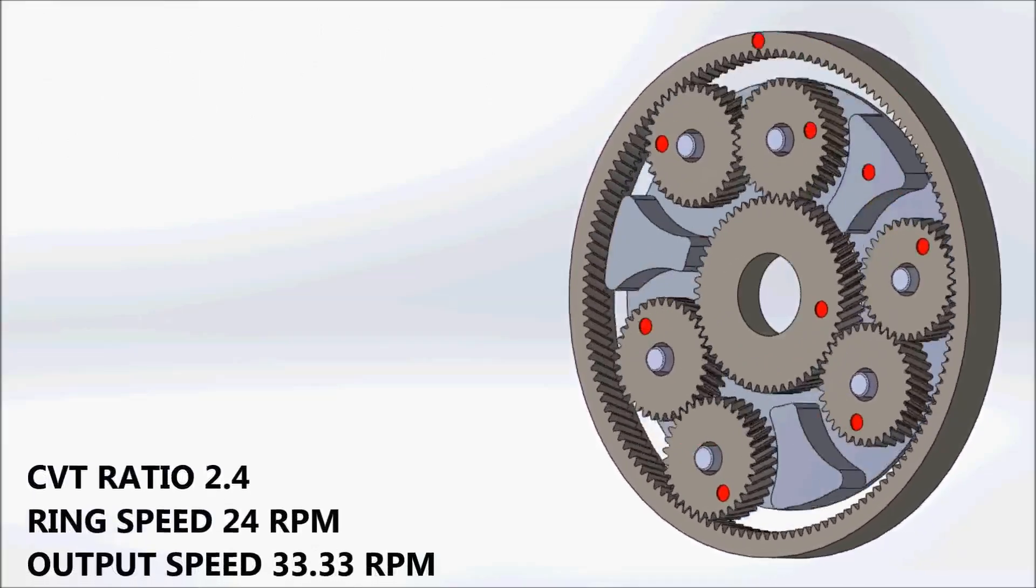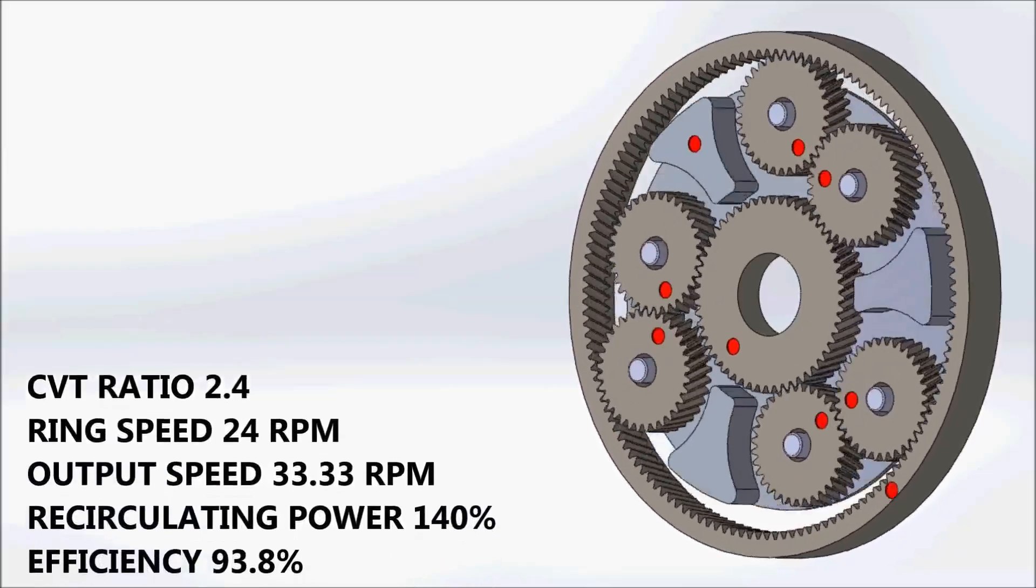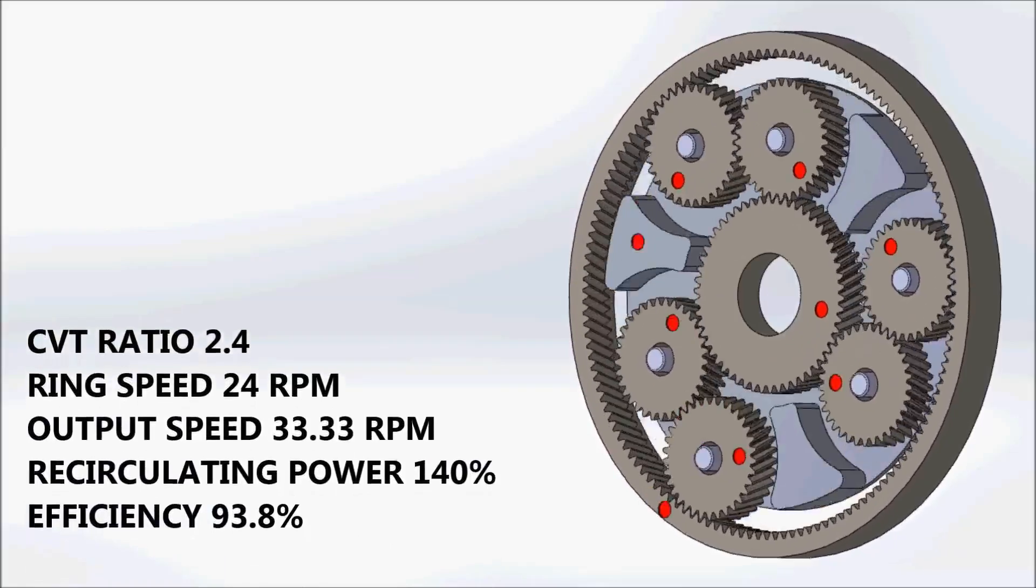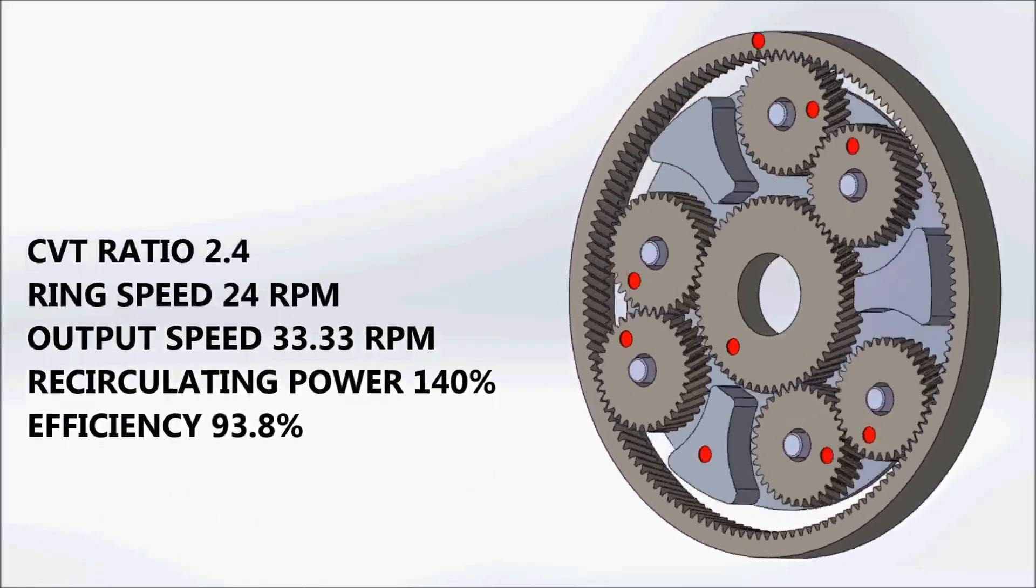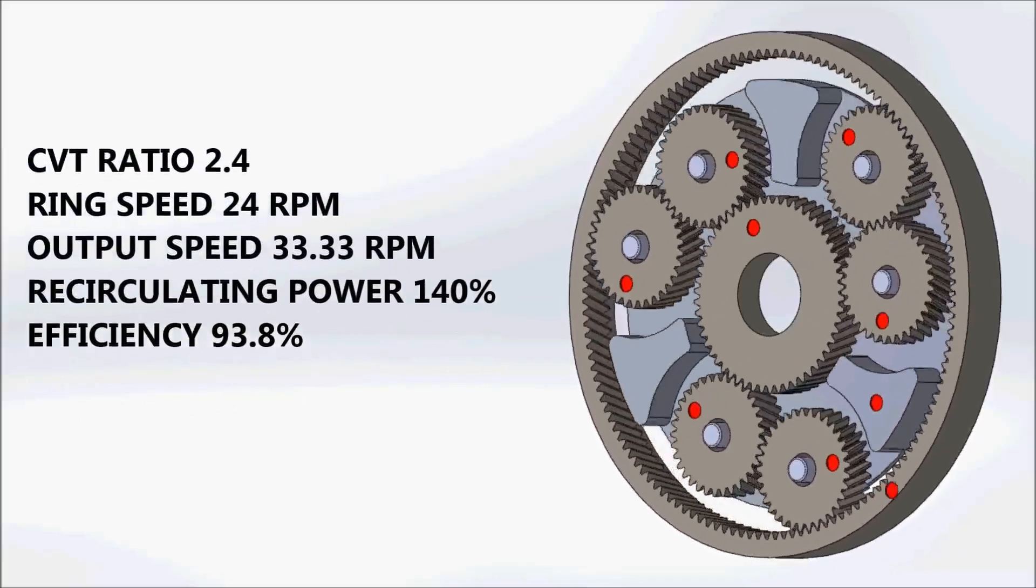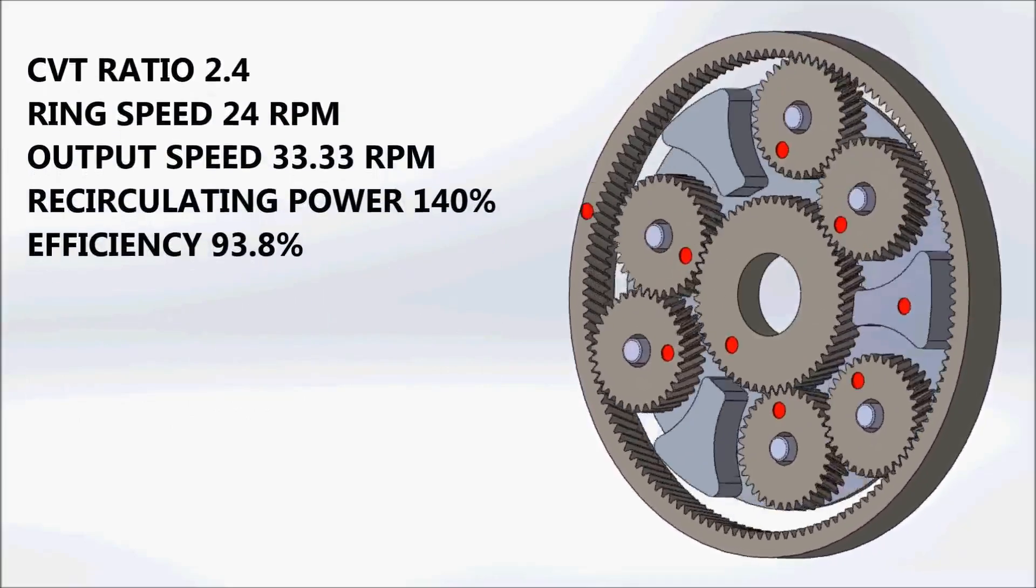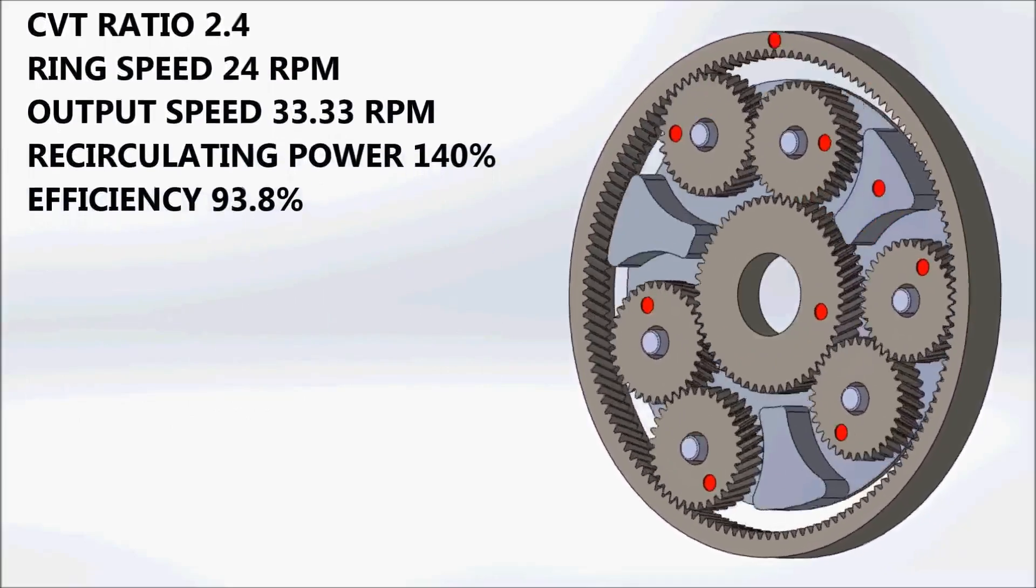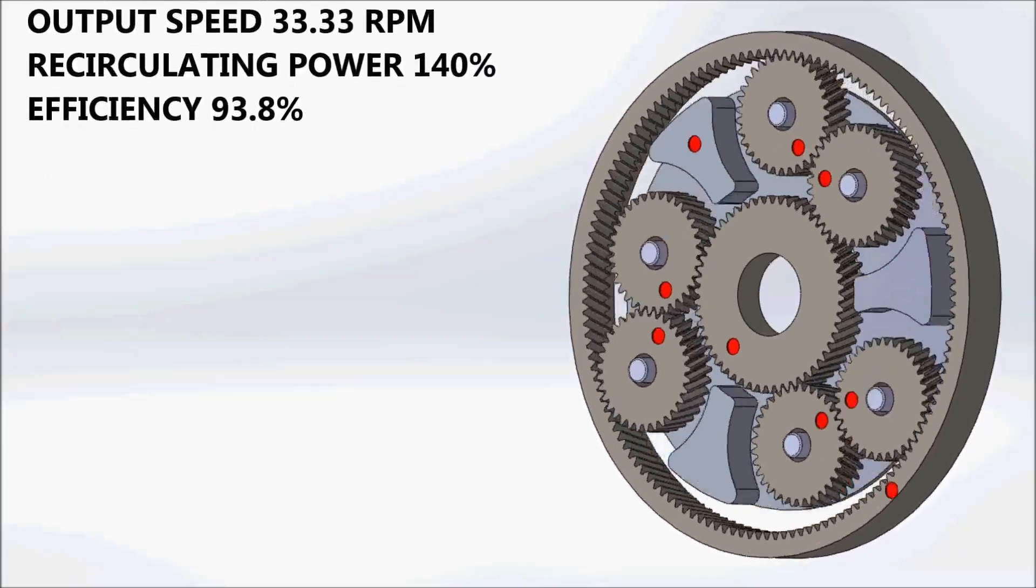With a further ratio change towards high gear, with the CVT at a ratio of 2.4, the output speed becomes 33.33. The vehicle is now driving forwards at high speed. The recirculating power reduces further, although overall efficiency drops slightly.